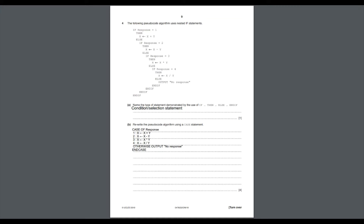Continuing: ELSE IF response = 3 THEN x ← x * y (asterisk means multiplication), ELSE IF response = 4 THEN x ← x / y (division), ELSE OUTPUT 'no response', ENDIF (four times, ending all started statements). From this program: entering 1 adds variables, 2 subtracts, 3 multiplies, 4 divides. The question asks to name the type of statement — this is a condition and selection statement, because each IF contains a condition.